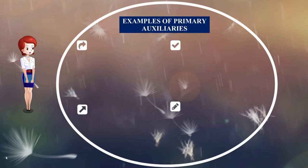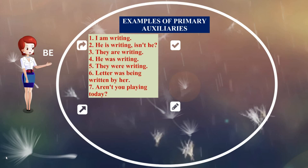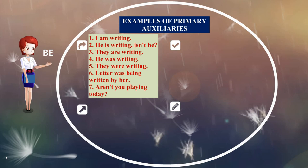Let us see examples of the 'be' primary auxiliary. 'I am writing' — here 'am' is the auxiliary, the present form of 'to be'. 'He is writing, isn't he?' — 'is' is used twice: once in the positive and once to form the question tag. 'They are writing' — 'are' is the primary auxiliary. 'He was writing' — 'was' is the primary auxiliary.